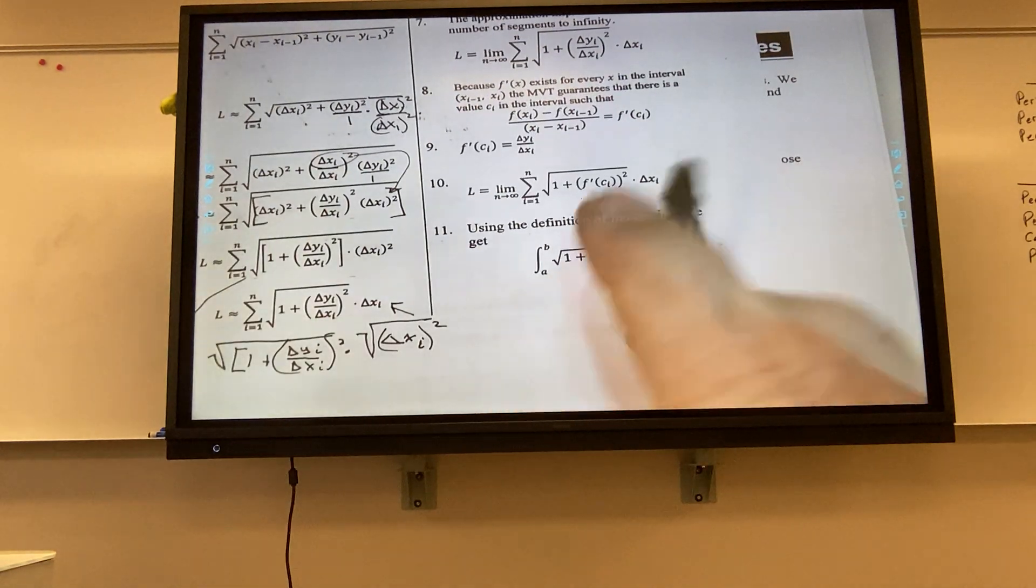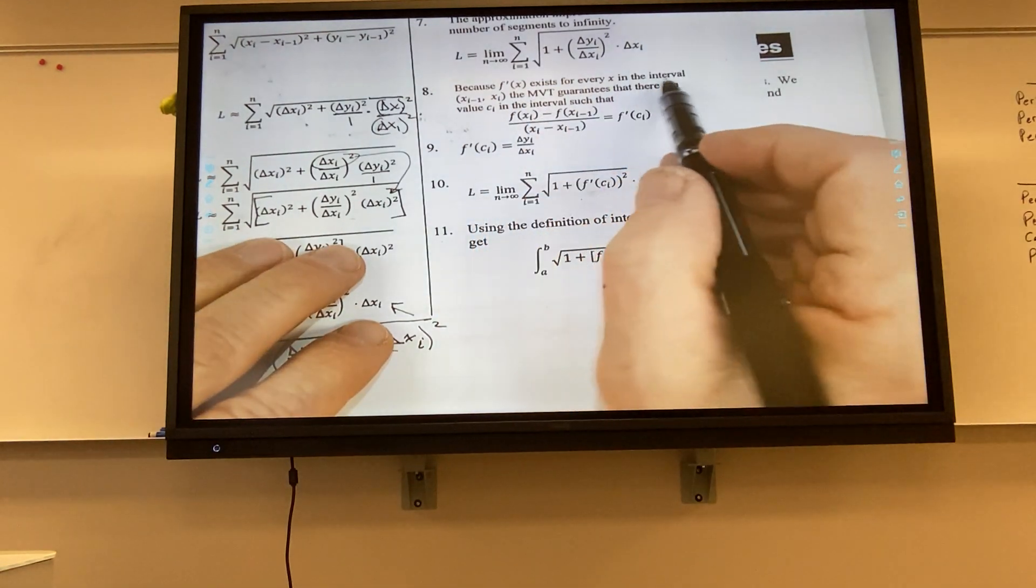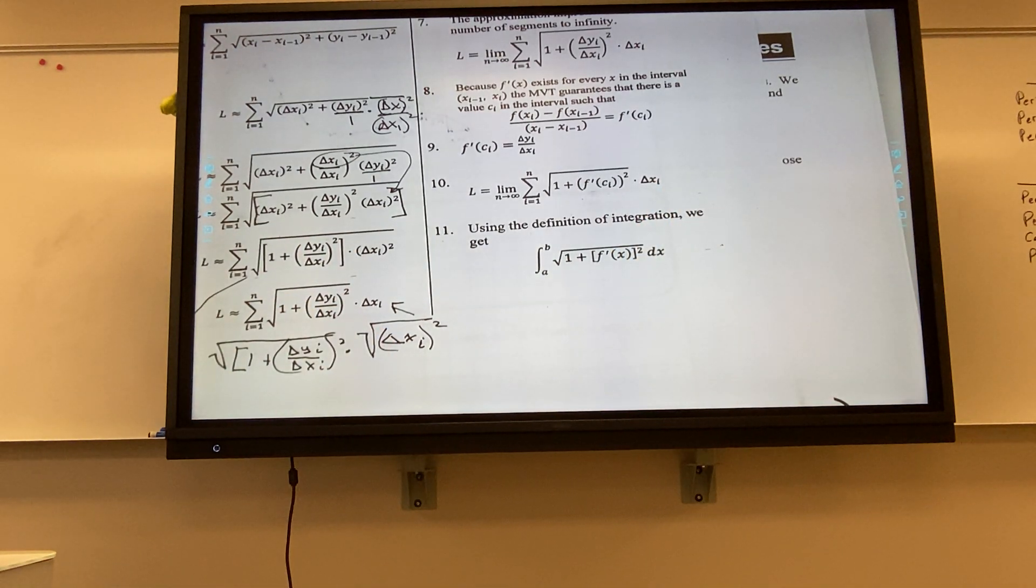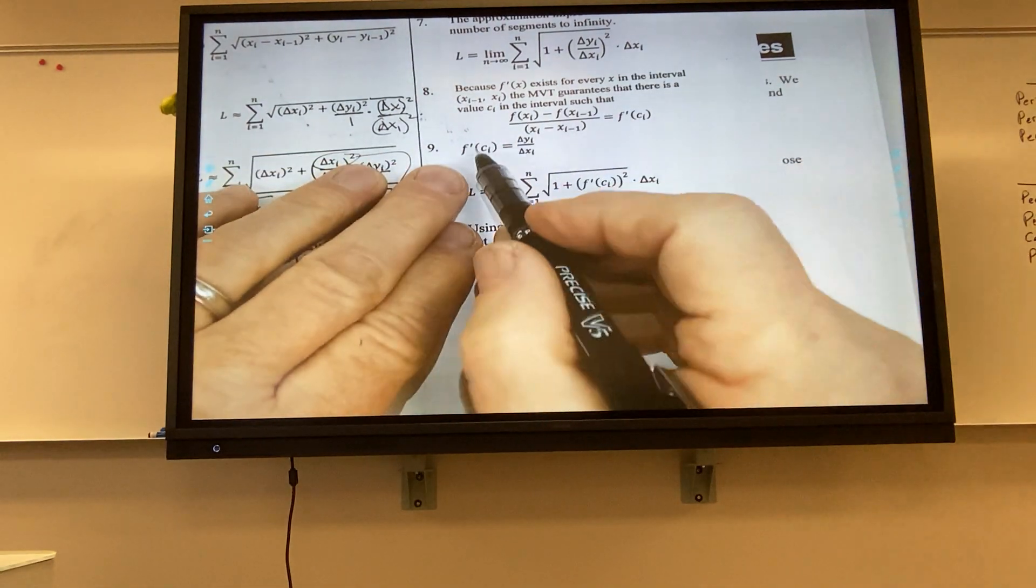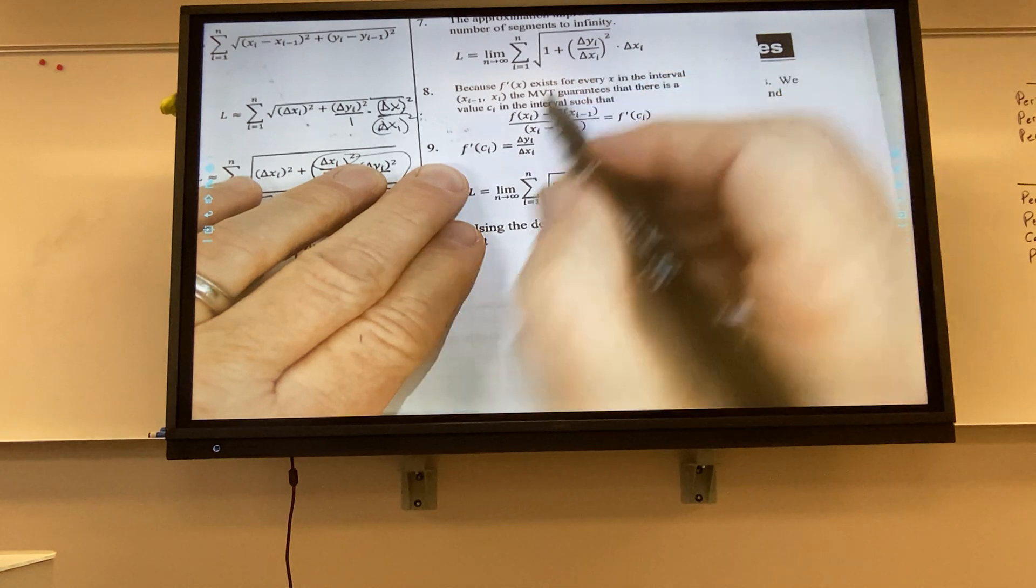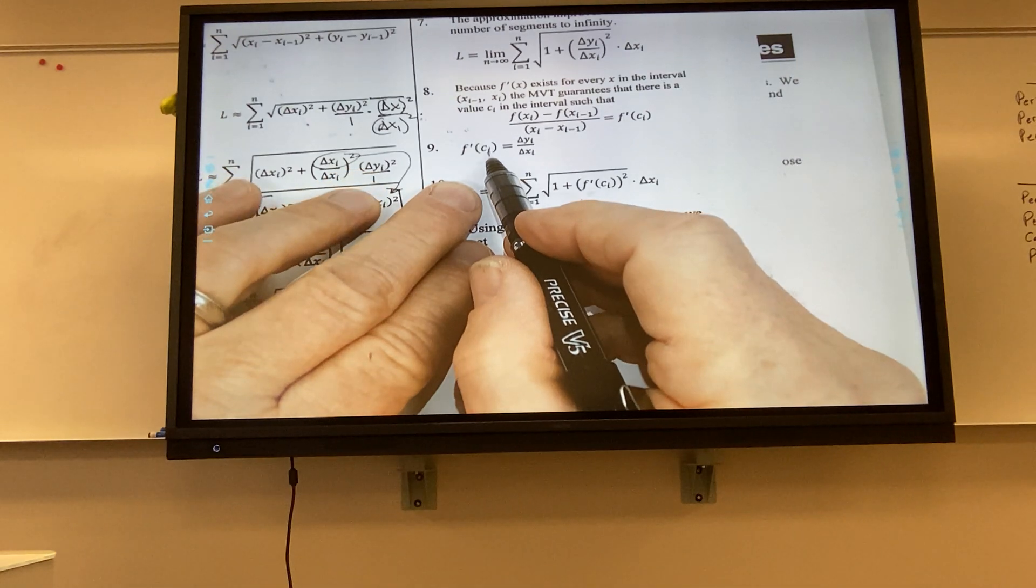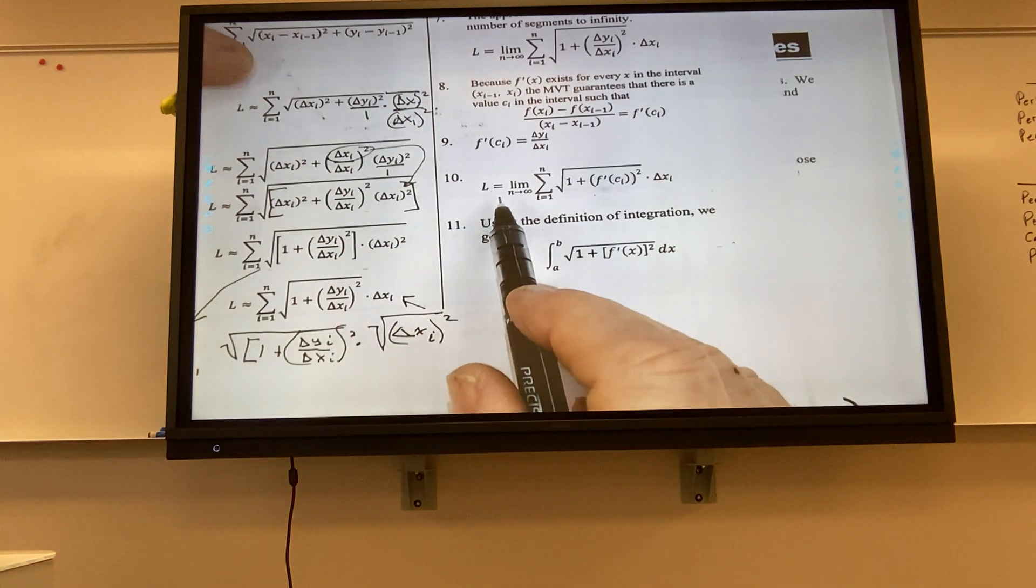Well, because it's a smooth curve, the derivative exists for every x in the interval. And the mean value theorem says, even so, all those points that are really close together, they are secant lines. Well, there's got to be a tangent line of value that has the same slope in between them, correct? That's what the mean value theorem says. So it means that this right here, I can replace with the derivative of f at a particular c, or as c moves along that interval.